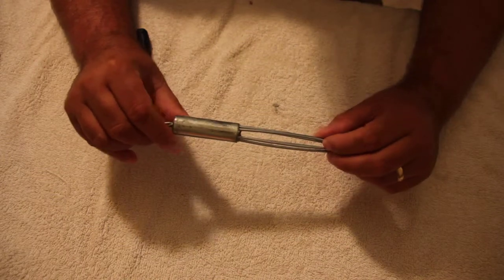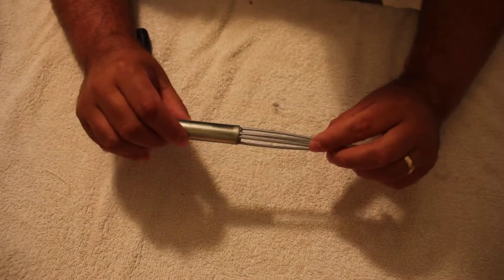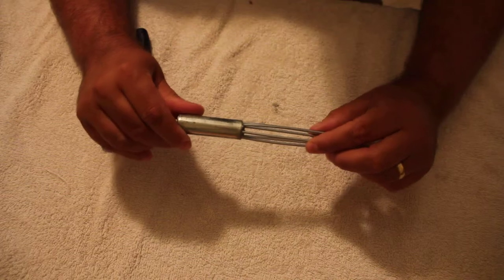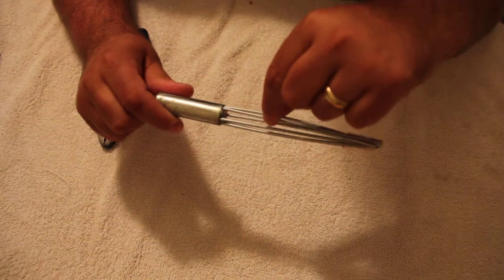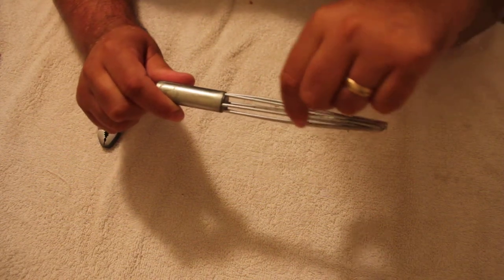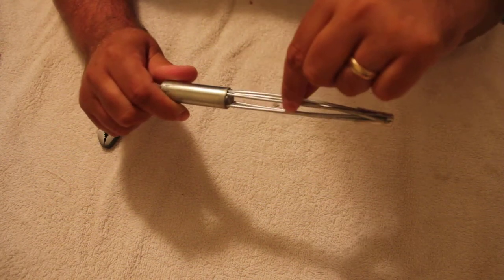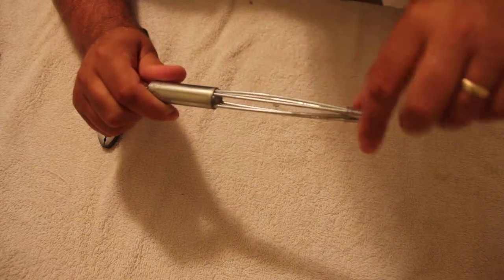This is a six ounce extra strength version. It comes in several different varieties. There's a six and an eight ounce weight but there's also a standard hold and an extra hold. The difference between the two is rather than having four tines, this one in particular has six because it's the extra hold version.